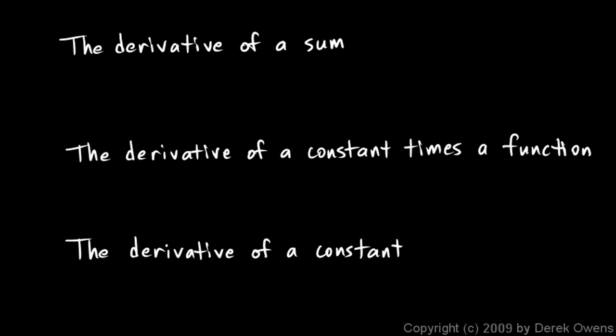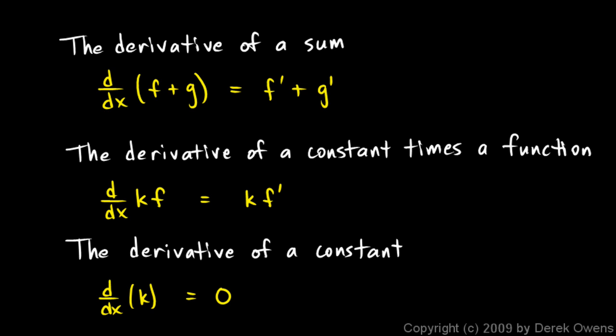And then most textbooks summarize these basic properties. The derivative of a sum, so I'll just summarize them here. The derivative of a sum is the sum of the derivatives. So the derivative of f plus g, where f and g are both functions of x, is just f prime plus g prime. And the derivative of a constant times a function, the derivative of some constant times f is just going to be that constant times the derivative of f. And then the derivative of a constant, if k is a constant, the derivative is simply 0.